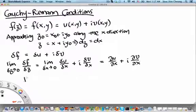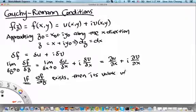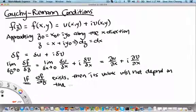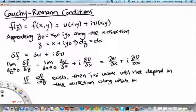Now, this is a big if: if df/dz exists, then its value will not depend on the direction along which we approach z0.